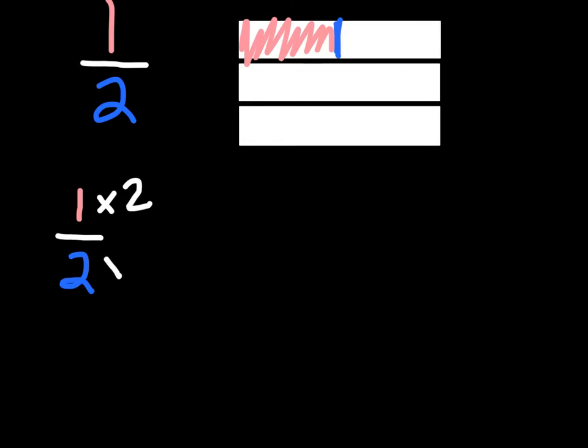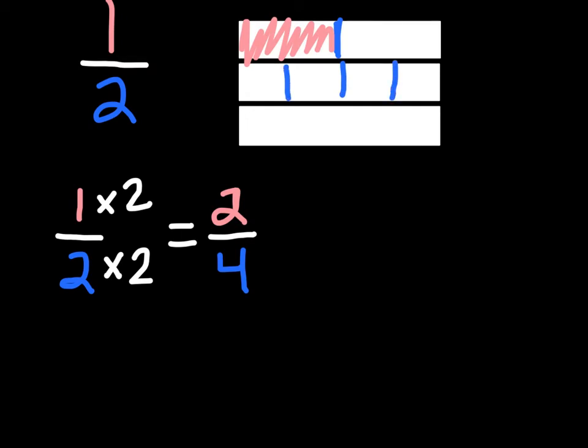When I want to find an equivalent fraction, I'm going to multiply by a common factor. Whatever I do to the numerator I have to do to the denominator. Let's start with the number two — multiply the numerator by two and multiply the denominator by the same number. Doing that I end up with the fraction two fourths. On a fraction bar I split it into four pieces and shade in two. You can see that even though two fourths looks different from one half, the fraction bars still look the same — two fourths is equivalent to one half.